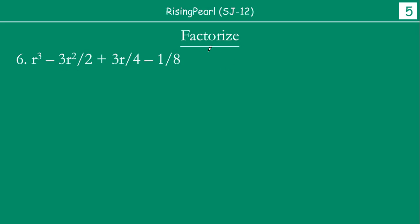If you are given something like this to factorize, the first thing you notice is that there is a variable r and the maximum term is cubed. So you are working with Identity 6 or 7, because maximum power is 3. Also immediately notice that 1/8 can be written as 1³ divided by 2³, i.e., (1/2)³.